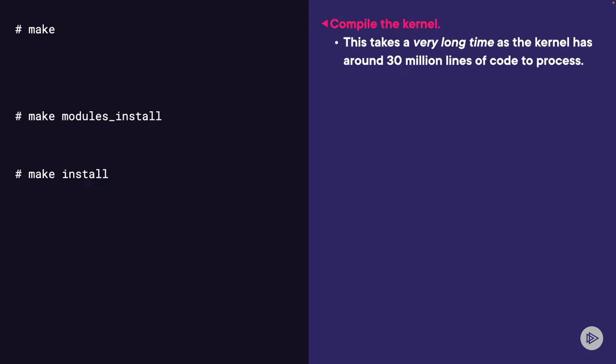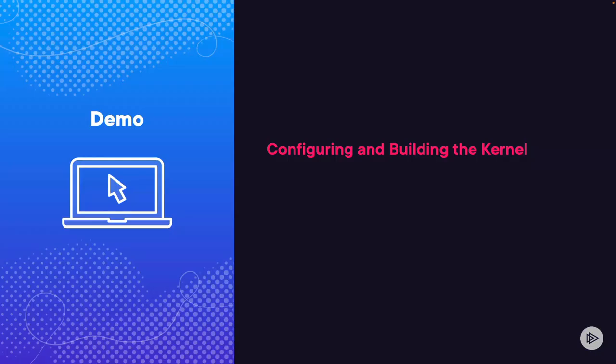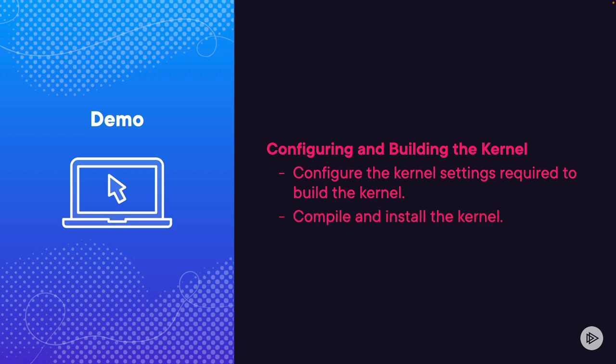Next, we're going to run the make command to compile our kernel. This command takes a very long time — the kernel has over 30 million lines of code to process. If you'd like to pause this lesson and resume once that completes, you can come back and complete the additional steps. Next, we're going to install the required modules, and then install the compiled kernel.